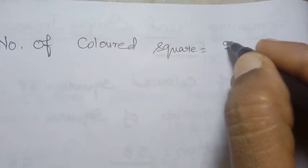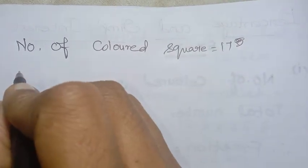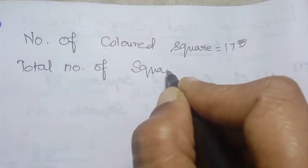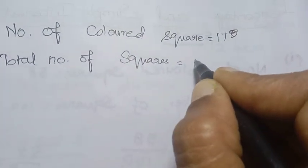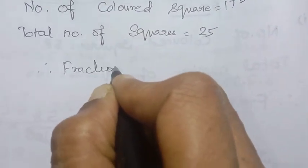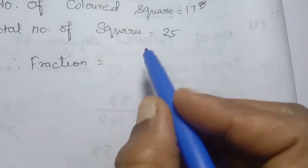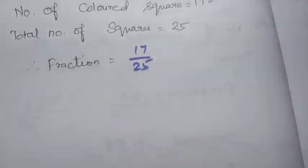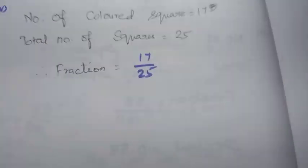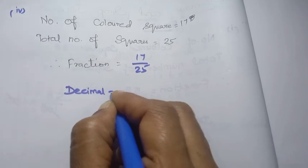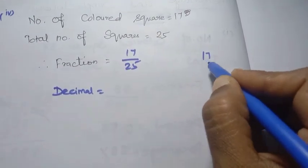For sum 4: colored squares = 17, total squares = 25. Therefore, fraction = 17/25. Now for decimal, we compute 17 divided by 25.